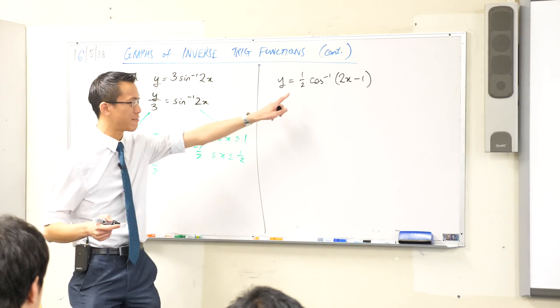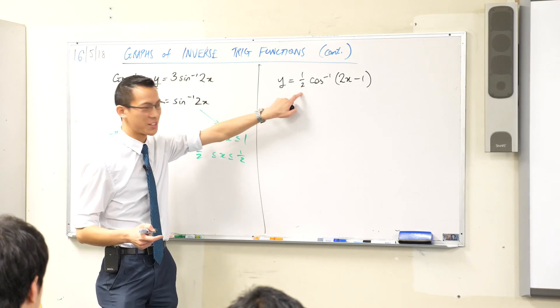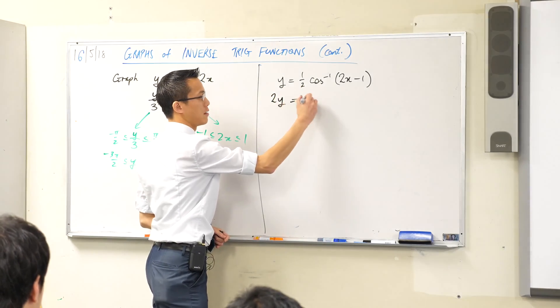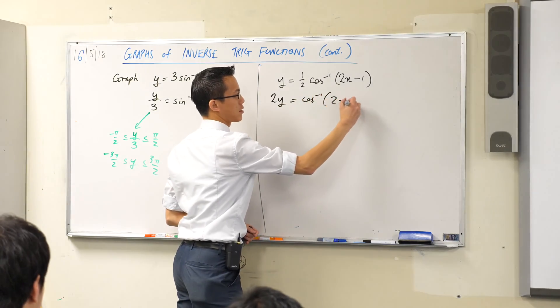It's vertical, right? So I think really this half, this constant belongs with the y because that's the vertical thing. So I'm going to write this as 2y equals cos inverse of 2x minus 1.